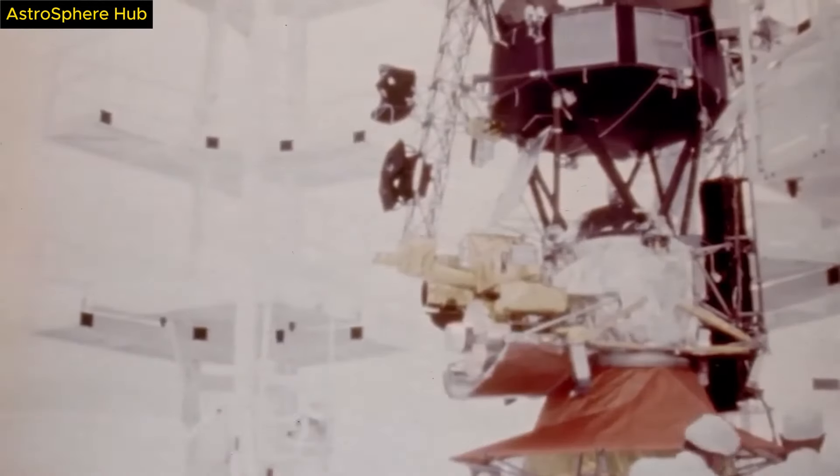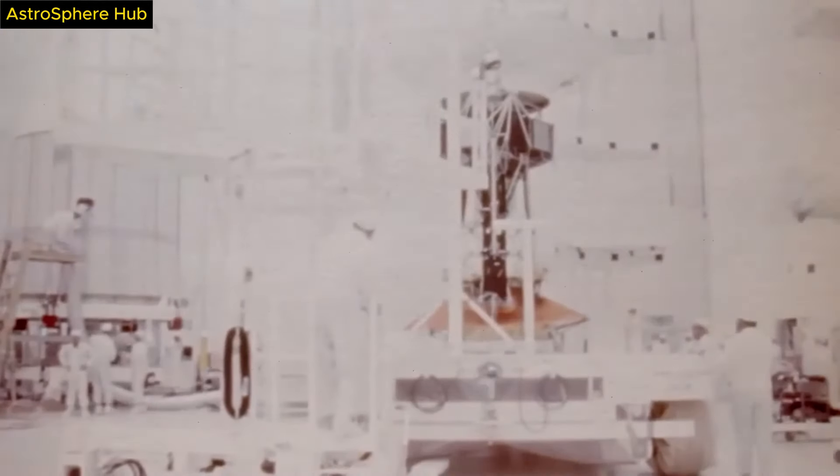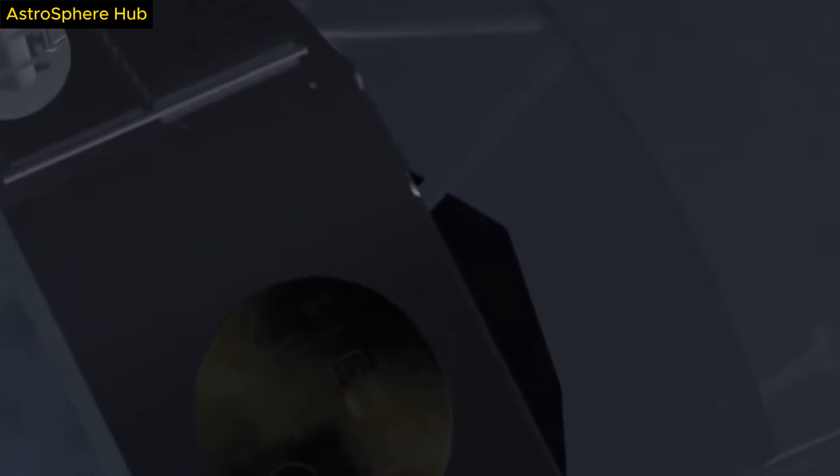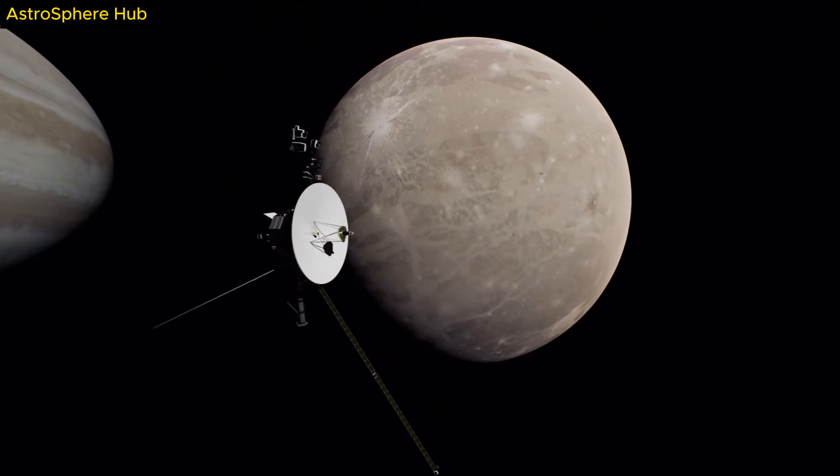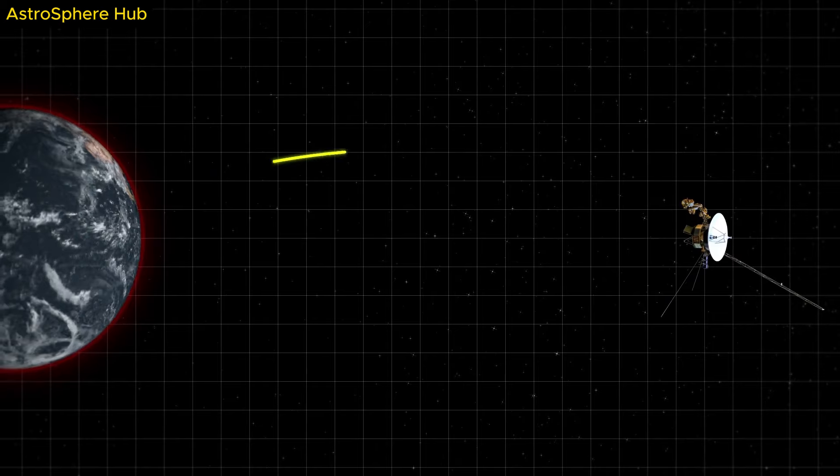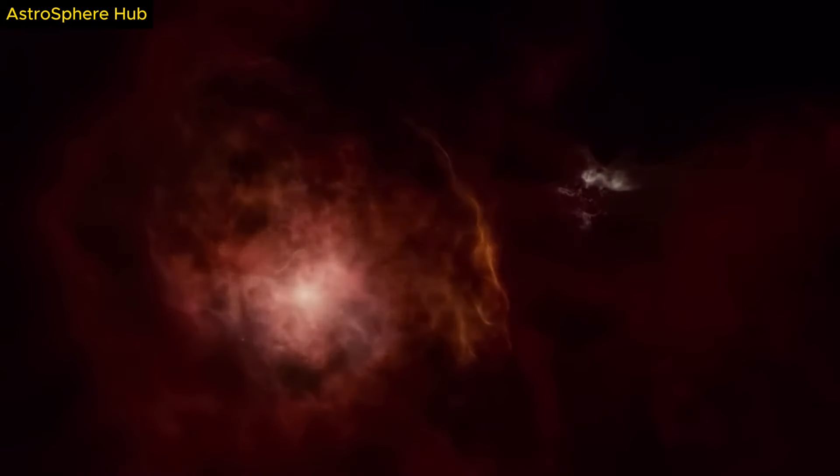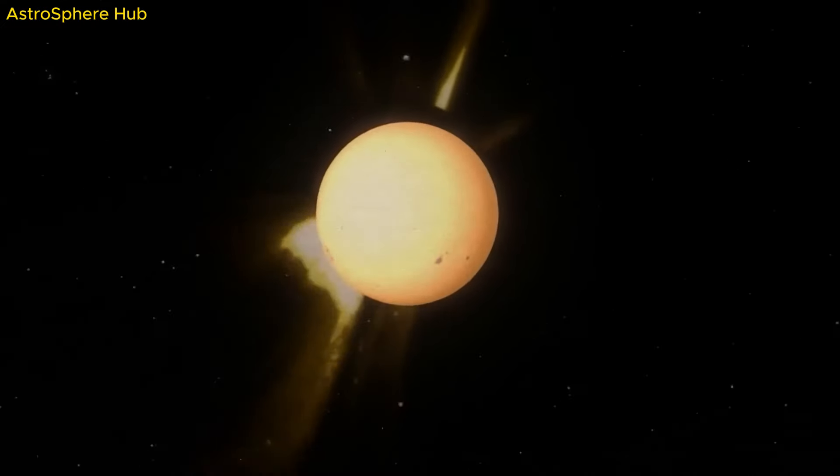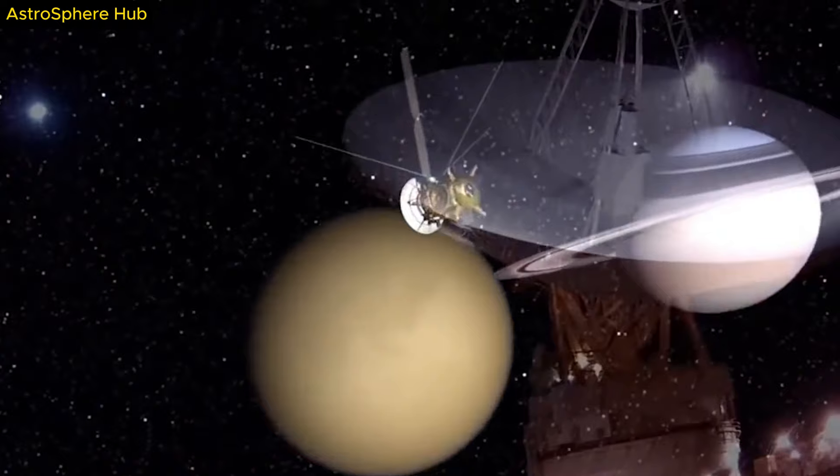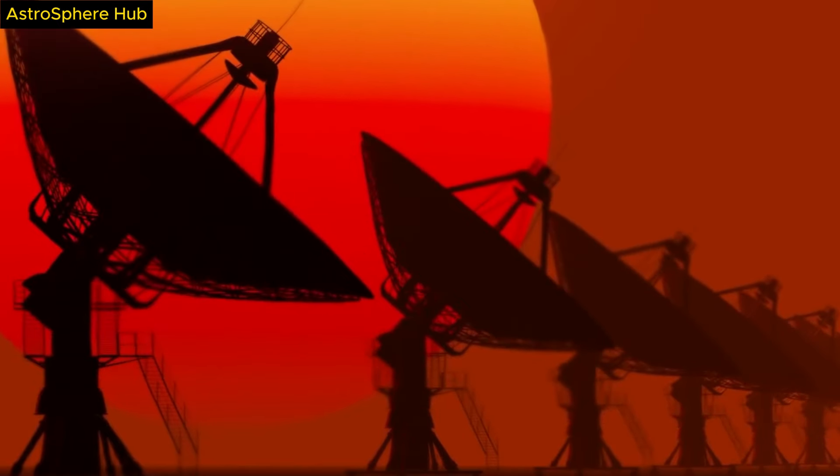But just because the probes will one day go silent, that doesn't mean the Voyagers will be useless to us. Let's not forget that both spacecraft carry a message from Earth for other advanced civilizations that might be out there and might potentially spot these probes in space. The Voyager Golden Records are phonograph records that were put aboard both of the Voyager spacecrafts. These records were intended to provide a snapshot of Earth and its inhabitants for any extraterrestrial intelligence that might encounter the probes in the distant future. The records include recordings of various natural sounds from Earth, such as thunder, bird songs, and the sound of ocean waves.